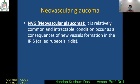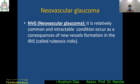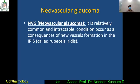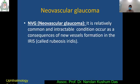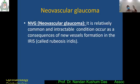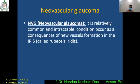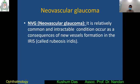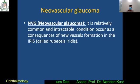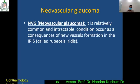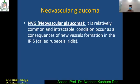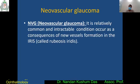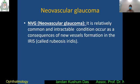Another secondary glaucoma is neovascular glaucoma — a relatively common and intractable condition occurring as a consequence of new vessel formation in the iris. The actual cause of neovascular glaucoma is retinal ischemia. If there is retinal ischemia, vascular endothelial growth factor (VEGF) is formed.